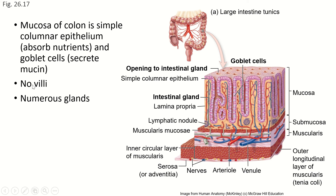So we don't see villi here. We do see lots and lots of glands, a really deep lamina propria, and the submucosa is thinner. We only have the circular layer of muscle; the longitudinal layer has been narrowed and reduced — that's the taenia coli.